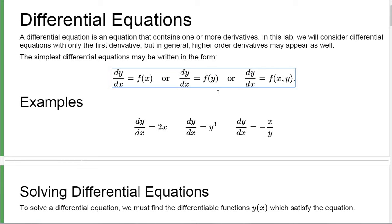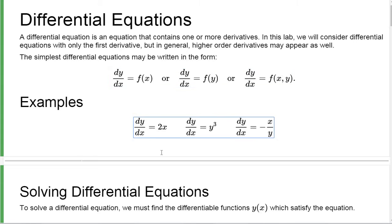Or the derivative of y is some function of y, or the derivative of y is some function of both x and y. So here's some examples: dy/dx is 2x — a function of x; here y cubed — function of y; and here negative x over y — function of both x and y.